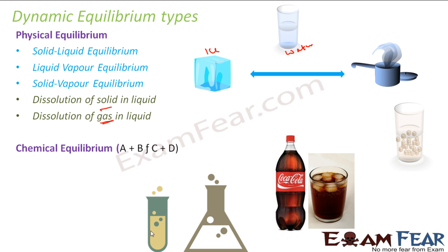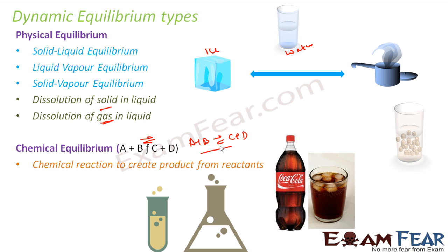Then we have chemical equilibrium, where two chemicals A and B combine to form C and D. A and B are in equilibrium with C and D. There are two reactants reacting with products and they are at equilibrium. The types of chemical reactions include normal chemical reactions, ionization, and hydrolysis of salts.